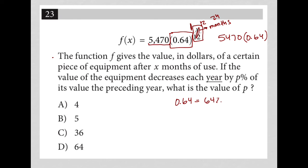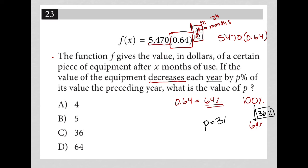The question isn't asking what the new value is or what percentage of the old value is the new value. It's asking what the percentage decrease is. So the answer will not be 64%, because the percent decrease asks: if you started with 100% of your original price and end up after a year with 64%, how much did you decrease? That decrease is 36%, which means p must equal 36.